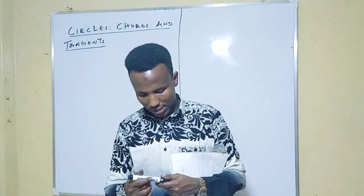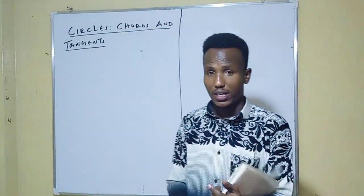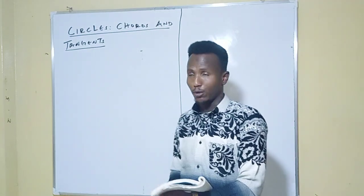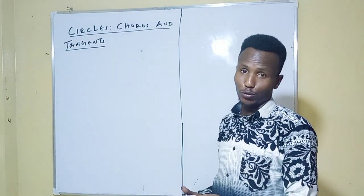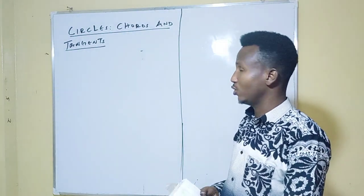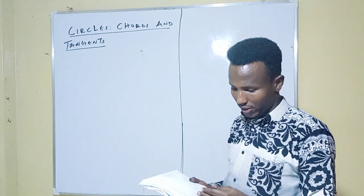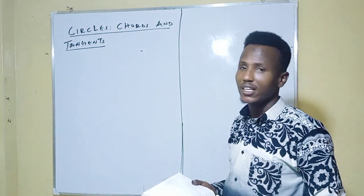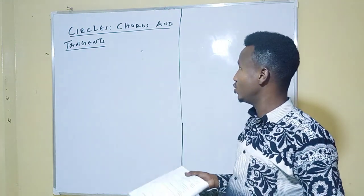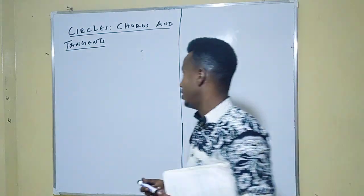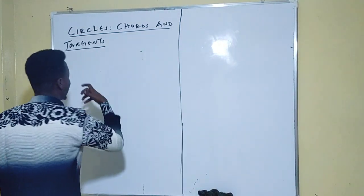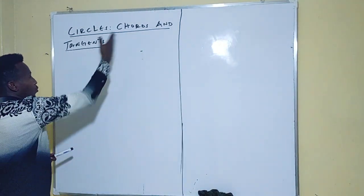Assalamu alaikum, my brothers and sisters, welcome back. This is Abdi Muhammad. I'll be taking you through math for Form 3. As you can see on the board, this is Chapter 7 of the KPR cycles, and under that we're going to see chords and tangents.